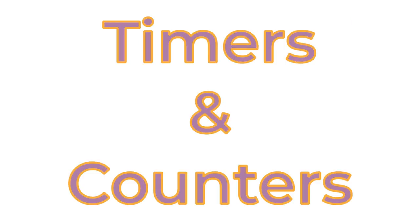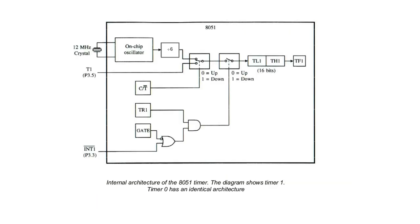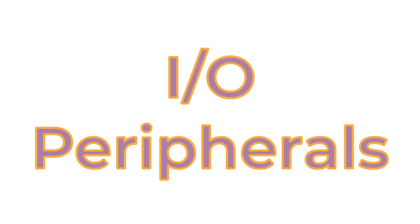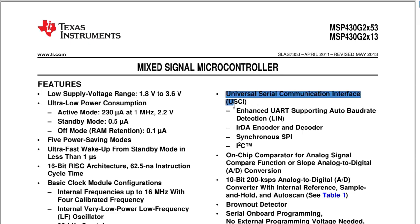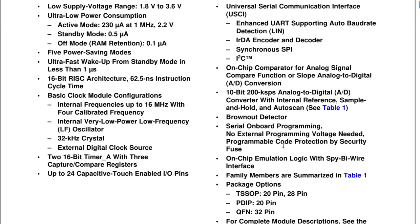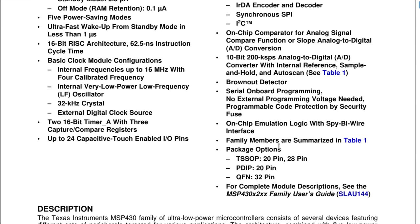For precise timekeeping, our MCU contains logic circuits known as timers and counters. A single microcontroller may contain several different timers and counters. Input/output peripherals include general purpose I/O ports, serial communication ports, parallel ports, a programming interface, and many more.